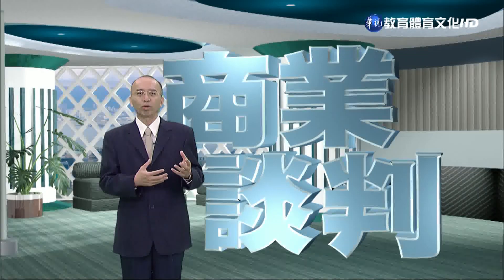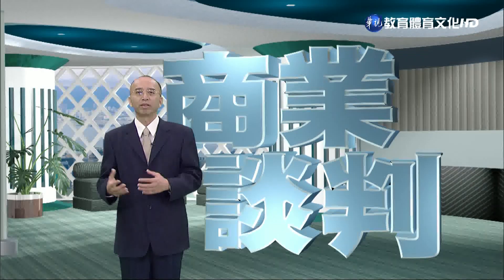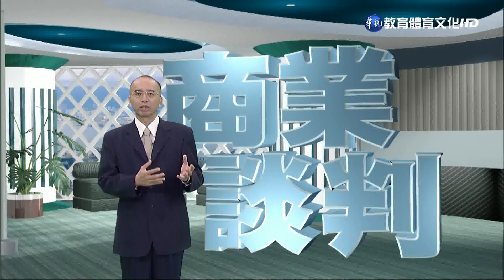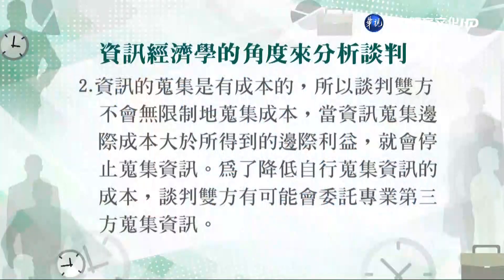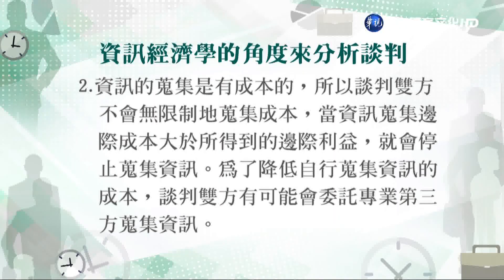掌握比較多正確資訊，或對資訊分析能力比較強的一方，通常談判力量是比較高的。例如中古屋或中古二手車的交易，車商擁有比較多的資訊且對汽車品質的判斷能力高於一般消費者，所以車商當然有比較高的談判力量。第二點，資訊的收集是有成本的，談判雙方不會無限制地去收集，會收集到邊際成本（marginal cost）大於邊際利益（marginal benefit）時停止。